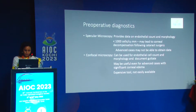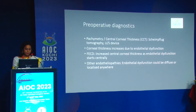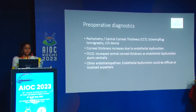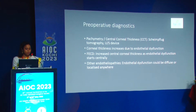Another important preoperative consideration is pachymetry or central corneal thickness. One can use a Scheimpflug topographer, an ultrasonic device, or the specular microscope to obtain this. Central corneal thickness increases due to endothelial dysfunction, and in Fuchs dystrophy it increases centrally, compared to other endothelial pathologies where dysfunction can be diffuse or localized.